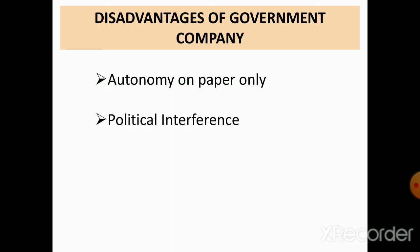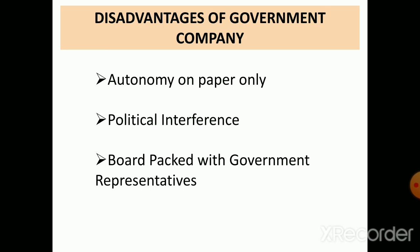The second disadvantage is political interference — government companies are treated as personal property of ministers, and ministerial interference is frequent. All operational policies and functions are formed according to the ministers' wishes. The third disadvantage is that the board is packed with government representatives. Since directors are appointed by the government, they always try to please the government rather than improve the efficiency of the company.